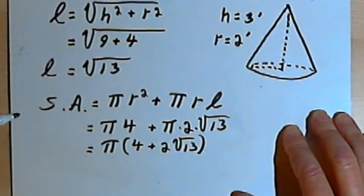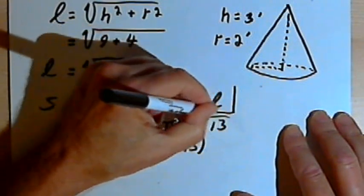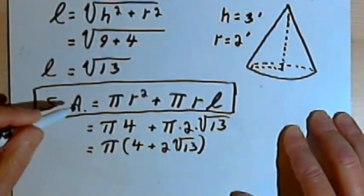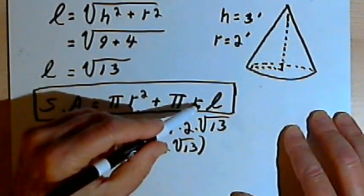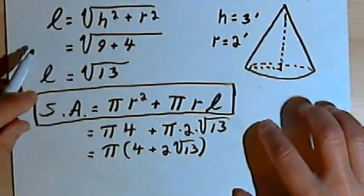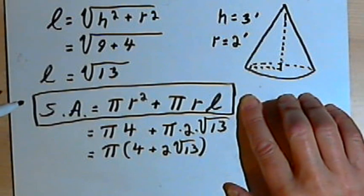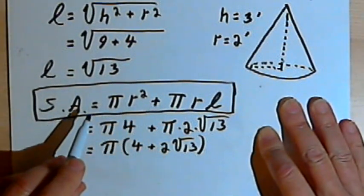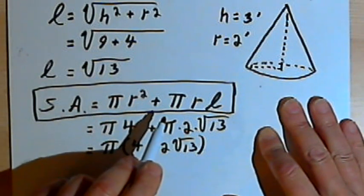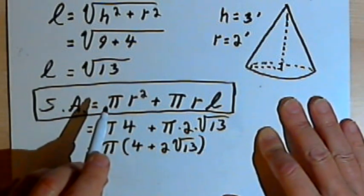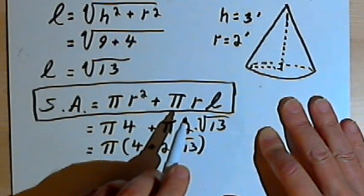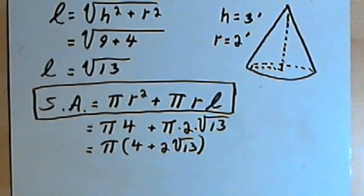Now, as with a lot of things in math, you can take this general formula for the area and memorize it: surface area equals pi R squared plus pi R L. But math is more about understanding than it is about memorization. So even though you might want to memorize this, you should probably make sure you understand how we derive the formula. Once you understand how to derive the formula, if you forget the specific formula, you can just make it up once again for yourself. So I hope that helps. Take care. I'll see you next time.